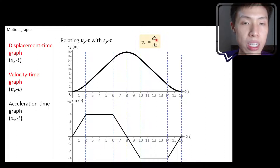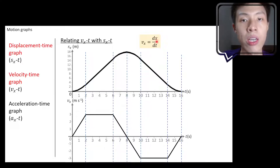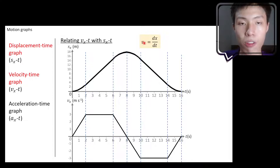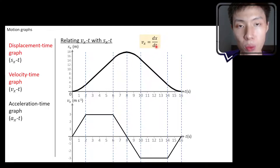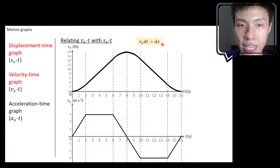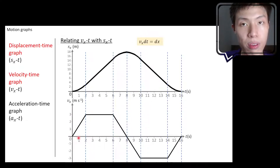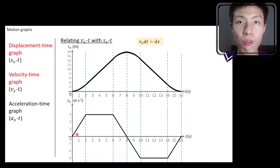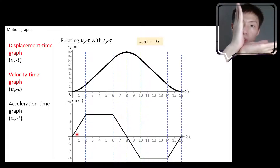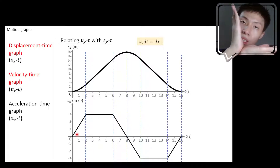If you look at this equation, we used it in the previous video to tell us that the gradient of the s-t graph will be equal to the value in the v-t graph. Now let's do a bit of rearrangement to this equation. Previously dt was in the denominator; we shift it to the left-hand side, so now vx times dt is equal to dx. Vx is something on the y-axis in the v-t graph, and dt is something on the x-axis. So if you take something on the y-axis and multiply something on the x-axis, it's similar to finding an area, because area is length times width.